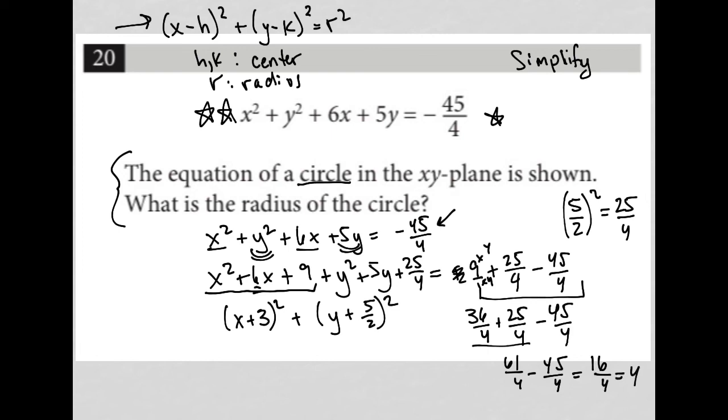16 divided by 4 is 4, so I have this equals 4. And again that means h is -3, k is -5/2, r² is 4. This is just me taking this simplified circle equation and matching it up with what I explained up here in terms of h, k, and r.